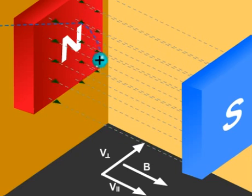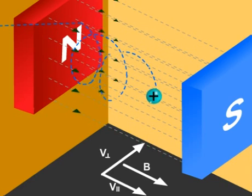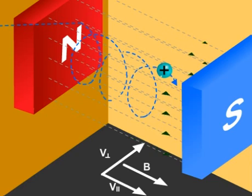So the particle will have linear motion along the magnetic field and also circular motion perpendicular to the magnetic field.